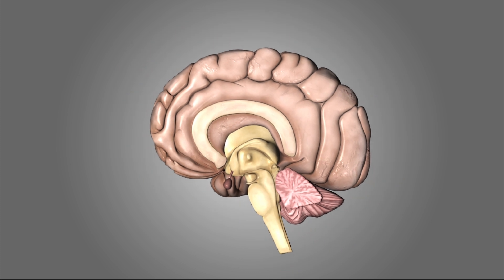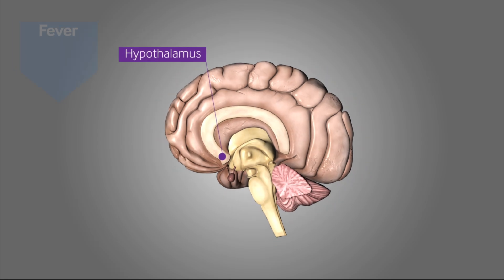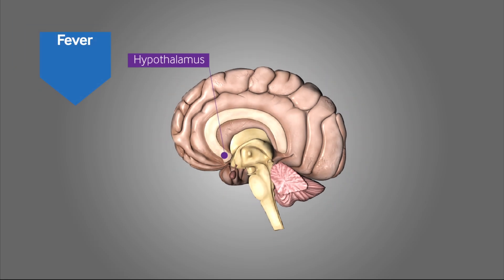Core body temperature is regulated by the hypothalamus, which functions as a thermostat controlling a set temperature. Fever, or pyrexia, is usually a physiological response to either infection or a non-infectious cause such as an autoimmune, inflammatory, or malignant process.